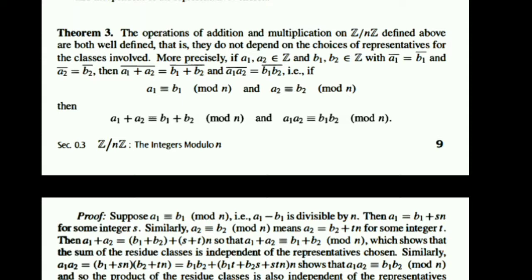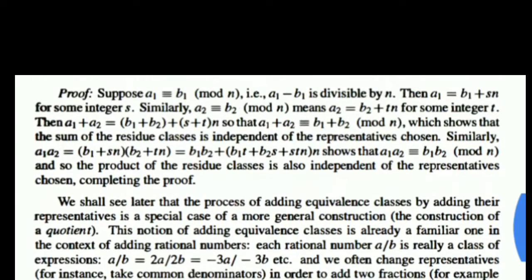In order to prove well-definedness, we take pairs of elements a1, a2 and b1, b2 from Z, with the assumption that class a1 is class b1 and class a2 is class b2. We have to prove that whenever we are adding any representative from the class, it will be the same for other representatives. That is, we prove that class of a1 plus a2 is class of b1 plus b2, and similarly for multiplication.